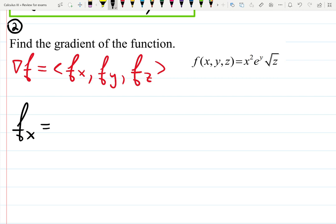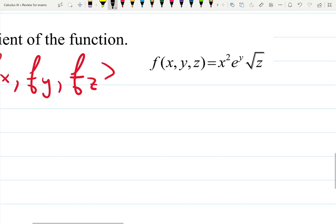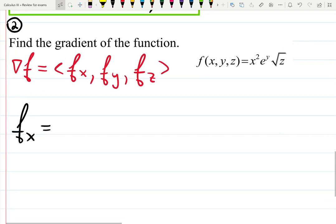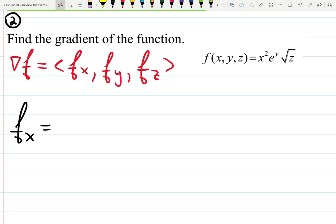The partial derivative with respect to x, as you can see, it's a product x squared times e to the y times square root of z, but it will not be a product rule if only x is a variable. Derivative of x squared is 2x.